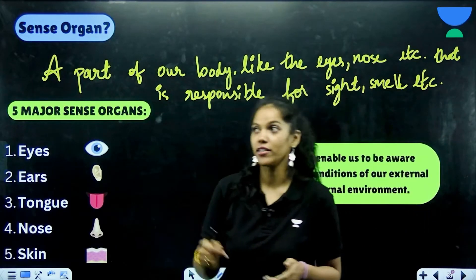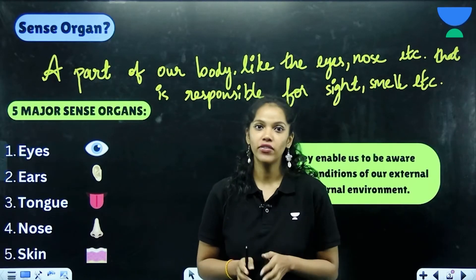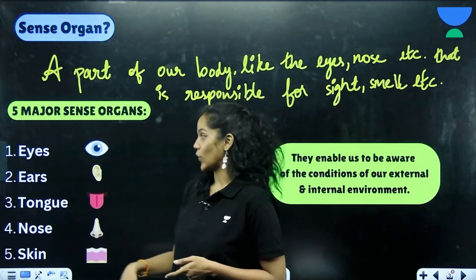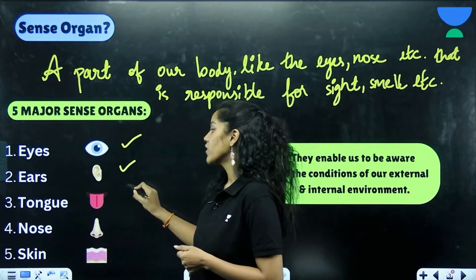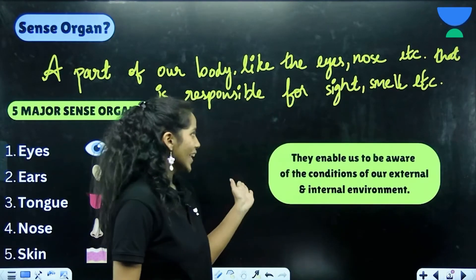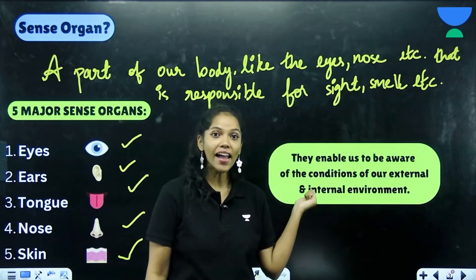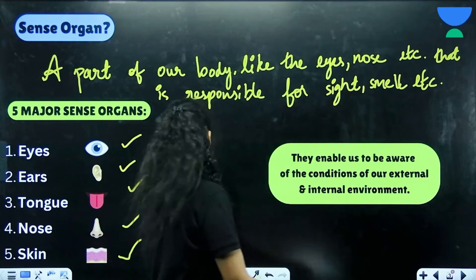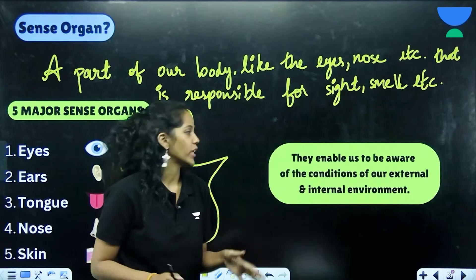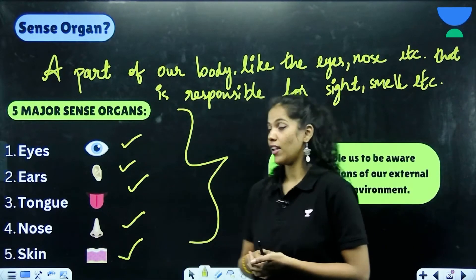The five major sense organs are your eyes, ears, tongue, nose, and skin. They enable us to be aware of the conditions of our external and internal environment. That is what our sense organs help us with.